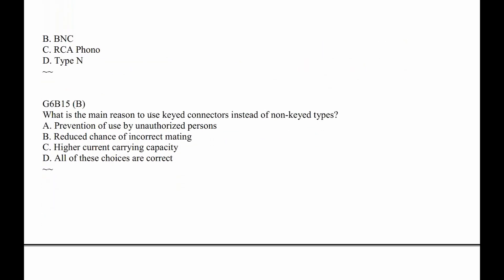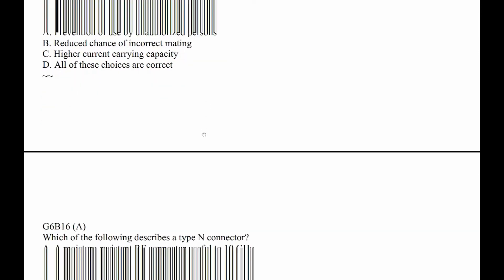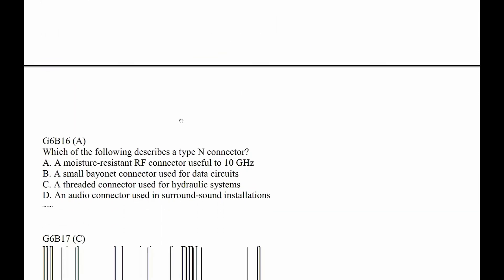G6B15. What is the main reason to use keyed connectors instead of non-keyed connectors? Well, it's for reduced chance of incorrect mating. For example, power poles are not keyed and you can hook them up backwards. G6B16. Which of the following describes an N connector? It is moisture resistant and good up high in frequency — so A is the answer: moisture resistant, useful to 10 gigahertz.